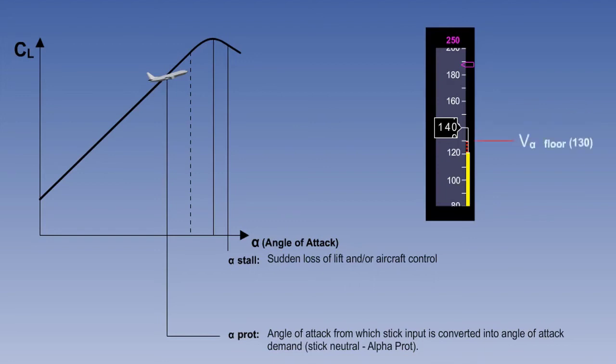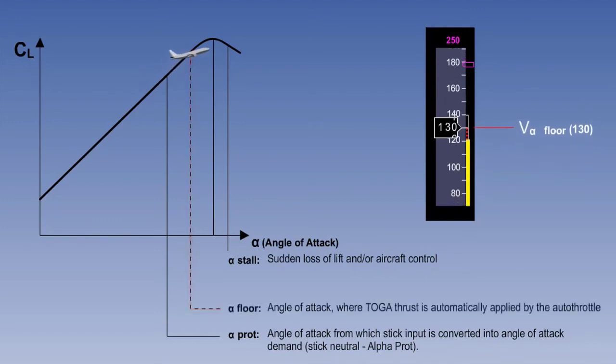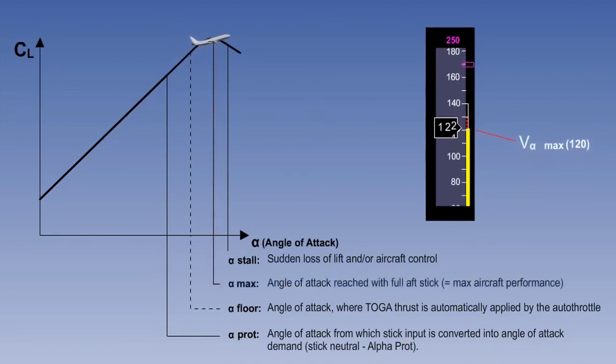If the pilot continues to pull back on the control, the airplane will continue to increase its angle of attack and the auto throttles will apply more power. If the pilot is still demanding an increase in the angle of attack, the flight control computer will allow him to select up to alpha max and no more. If the pilot was to release the control at any stage above alpha prot, the computer would maintain alpha prot angle of attack.